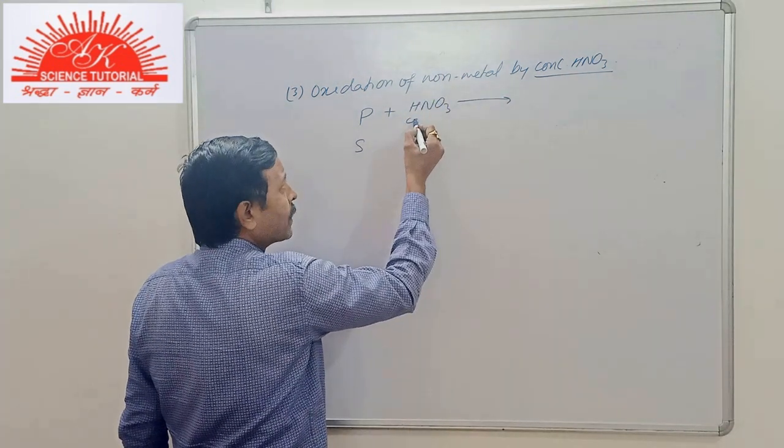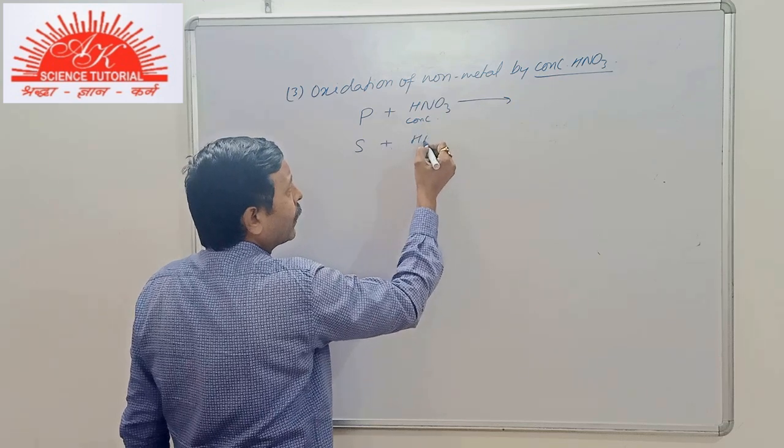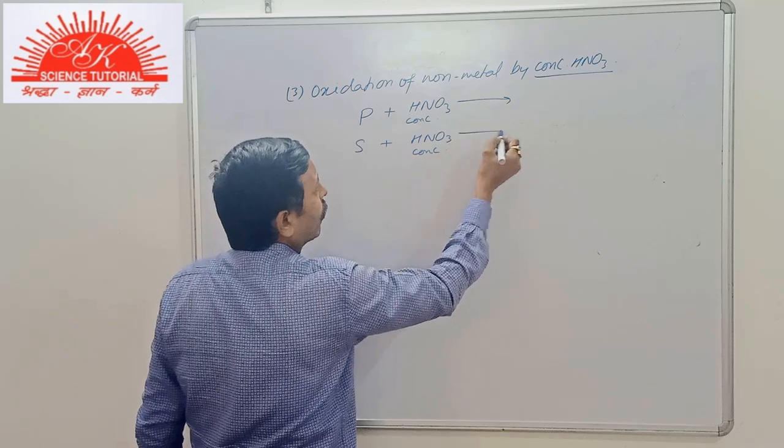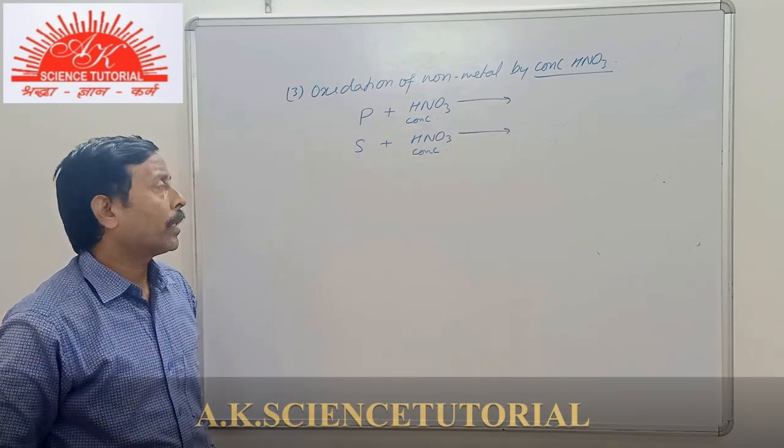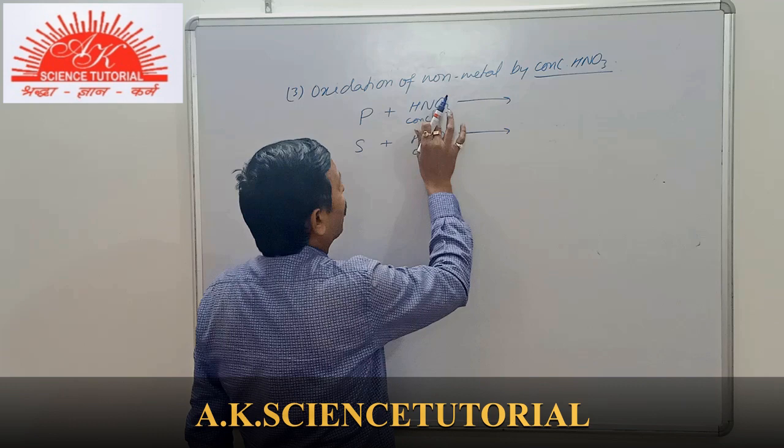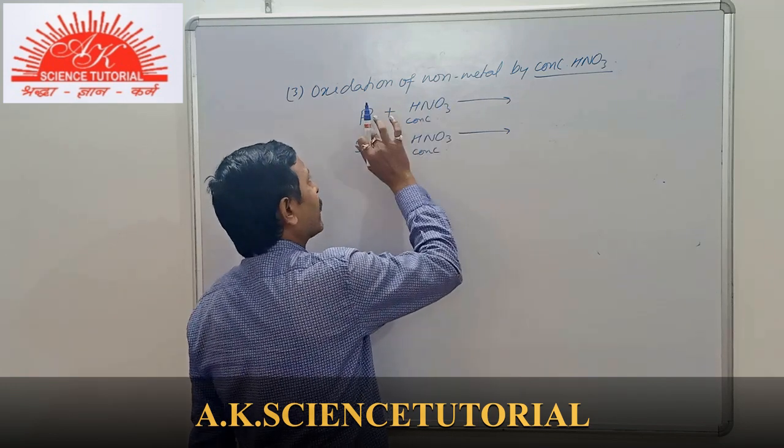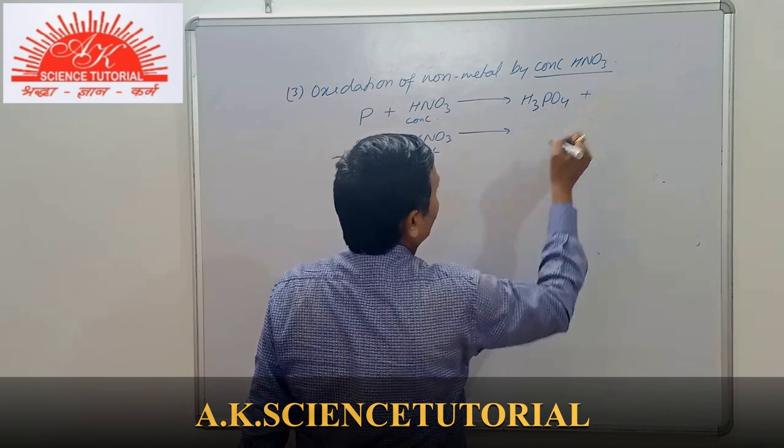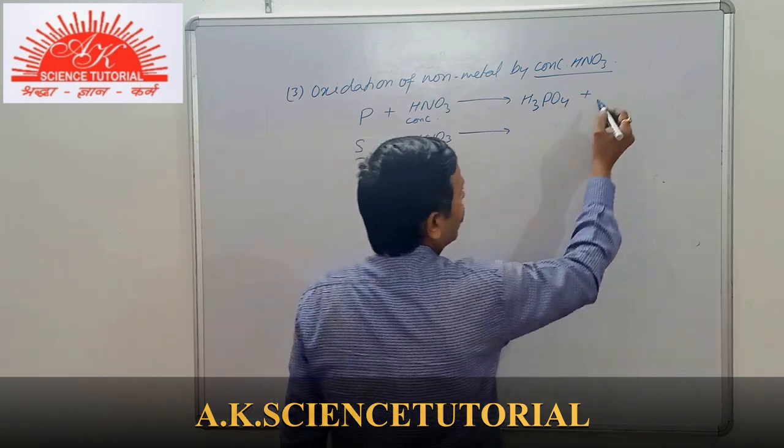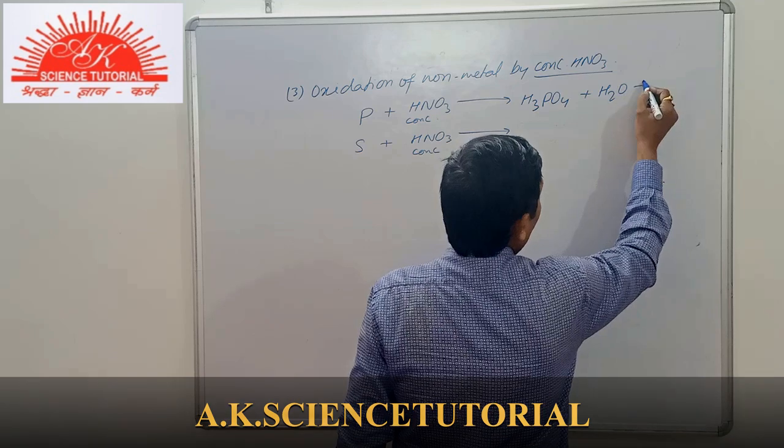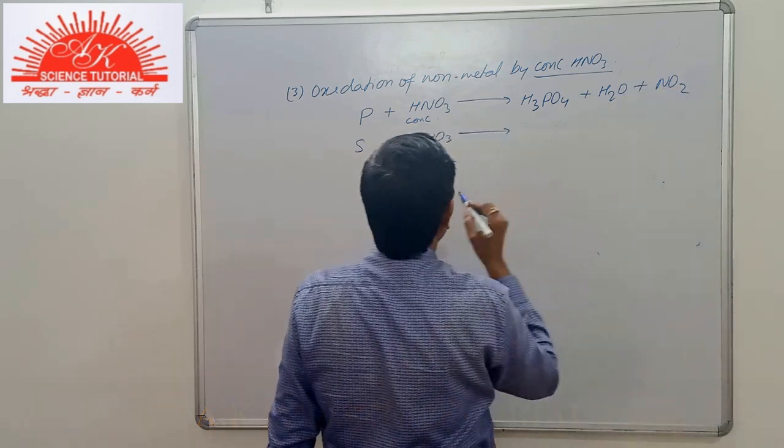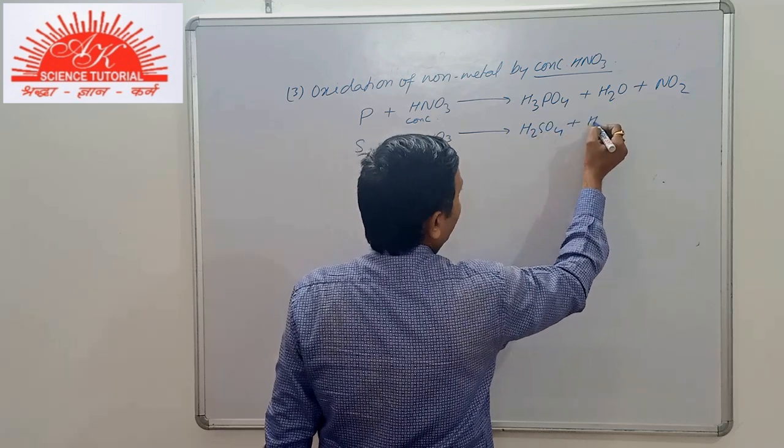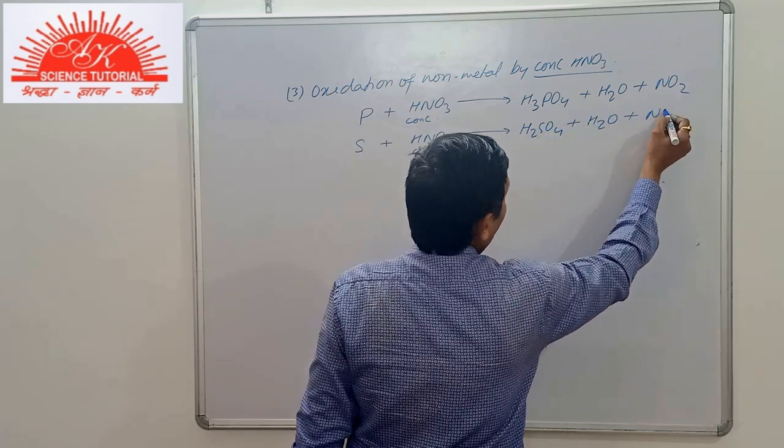Now, you must write here, while writing an equation, you must write for acid whether it is taken as dilute or concentrated. Because the property gets changed. So in this part, concentrated nitric acid oxidizes phosphorus to give us H3PO4. That is, the phosphoric acid. Sulfur gives us sulfuric acid plus H2O plus NO2.